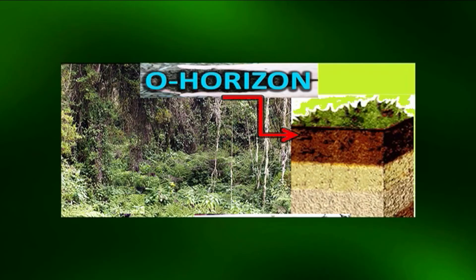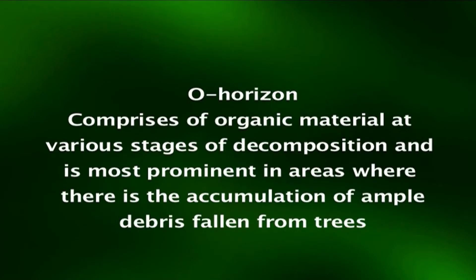The O or organic horizon is found in the soil formed under forest vegetation. It is composed mostly of vegetation that has fallen to the ground and the remains of animals such as insects, causing it to be dark in color. It comprises organic material at various stages of decomposition and is most prominent in areas where there is accumulation of ample debris fallen from trees. The mineral fraction in O horizons generally constitutes less than half the volume of the soil.